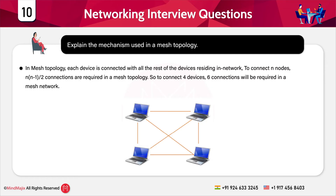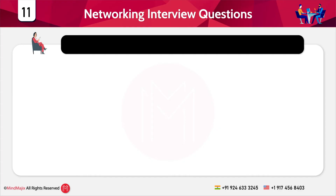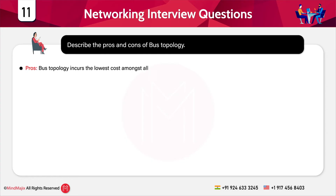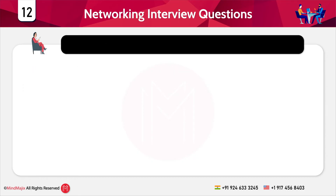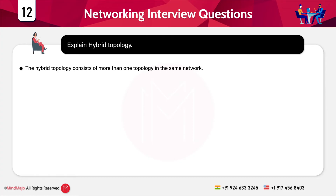The next question is: describe the pros and cons of bus topology. The pros: bus topology incurs the lowest cost among all available topologies. The cons: all devices are connected with a single cable, so if the main cable breaks the whole network will be affected. This is known as a single point of failure, and it is one of the biggest drawbacks of bus topology.